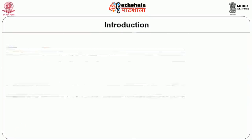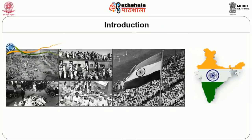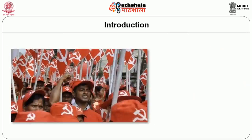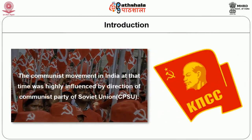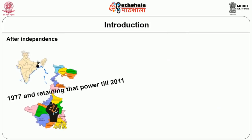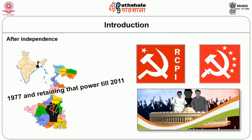In the evolution of Indian freedom struggle, the communist movement developed in India, but mostly they remained underground because of the wrath of the British administration. The communist movement in India at that time was highly influenced by the direction of the Communist Party of Soviet Union. After independence, and particularly after gaining power in West Bengal in 1977 and retaining that power till 2011, the communist parties of India became important for analysis of Indian politics.